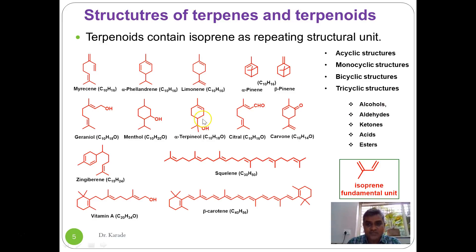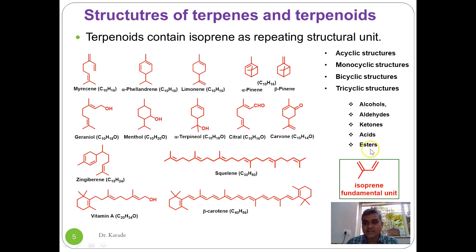As far as oxygen functionality in terpenoids is concerned, alcohols, aldehydes, and ketones are the three most common functional groups. Acids and esters also exist in the terpenoid family, but acid- and ester-containing functional groups are much less commonly available.